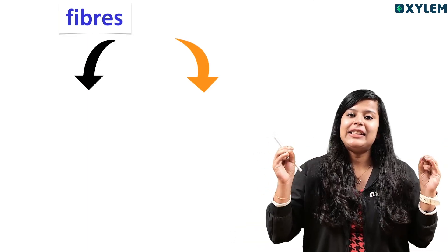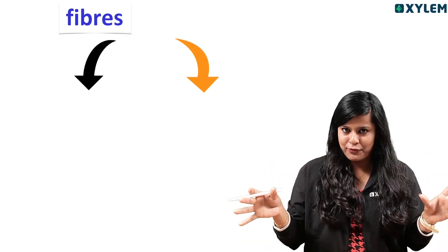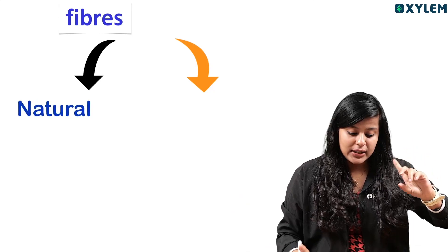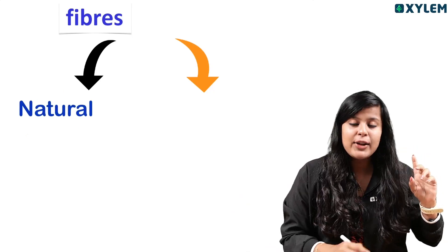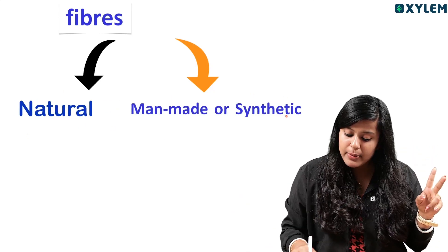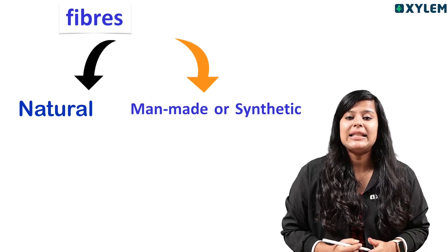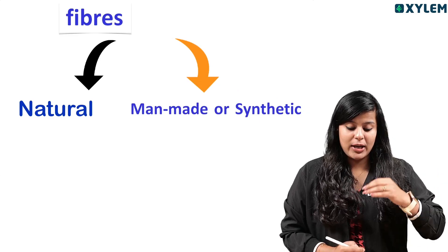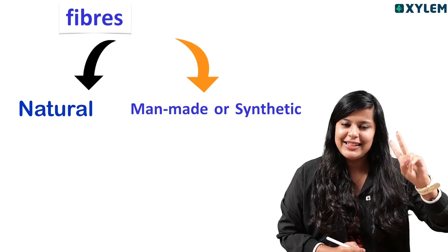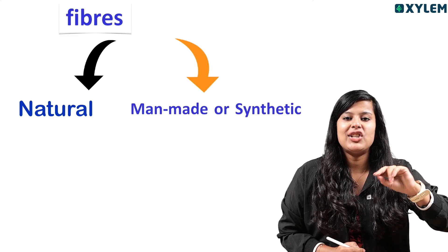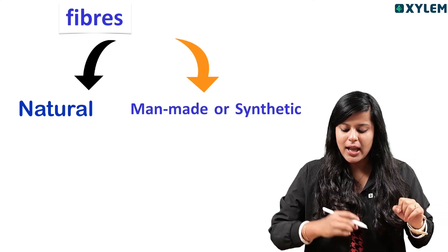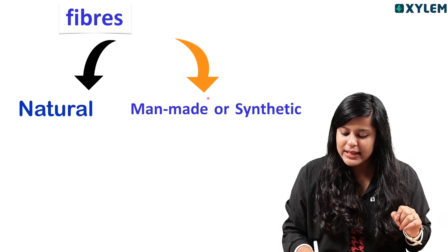You have to classify fibers. First one: natural fibers. Second one: manmade or synthetic fibers. So fiber is classified into two items: natural and manmade or synthetic.